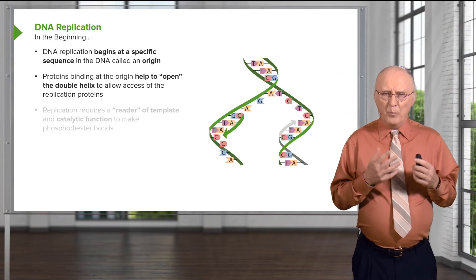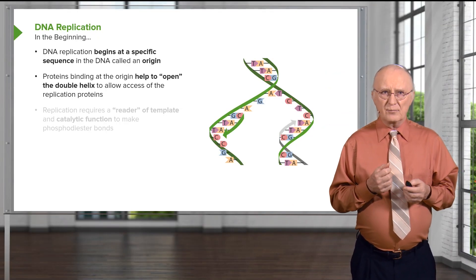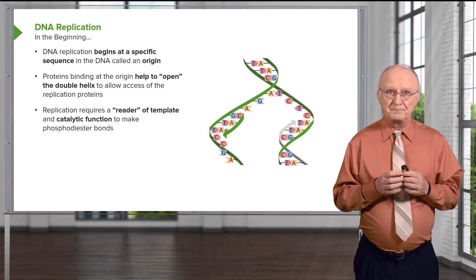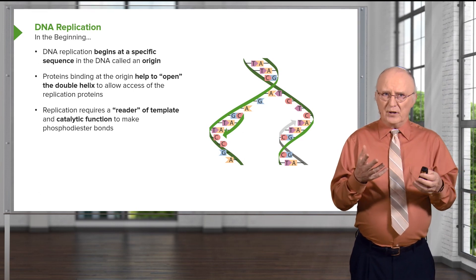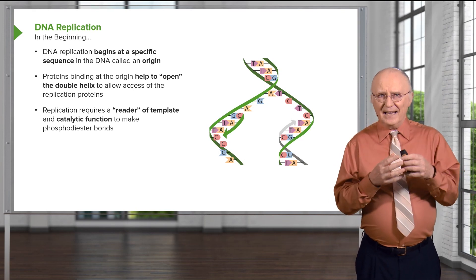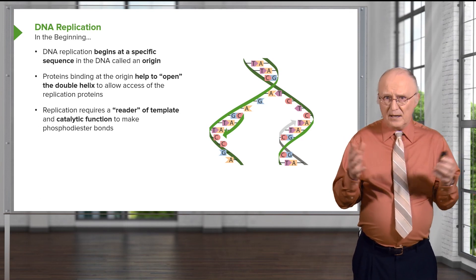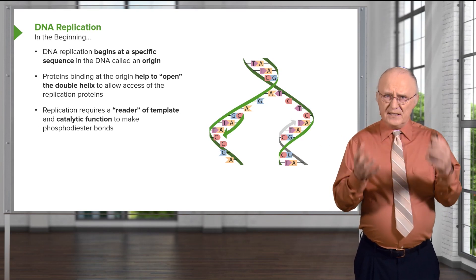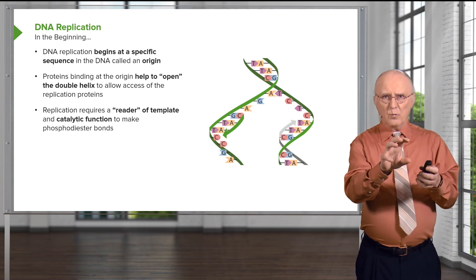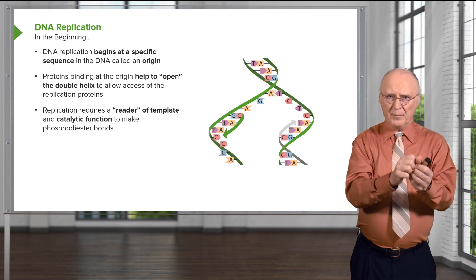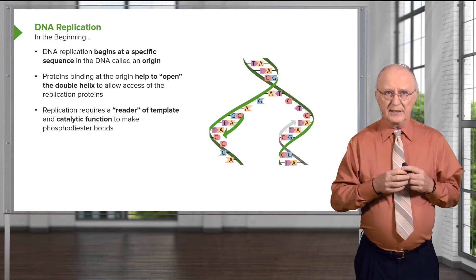These proteins will open the double helix to allow access of the replication proteins to get in and begin. The replication requires a reader of the template and a catalytic function to make phosphodiester bonds — basically, a DNA polymerase. It reads one strand, grabs the appropriate base, and then incorporates that into the strand it's building.